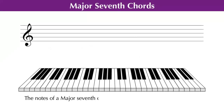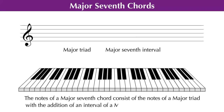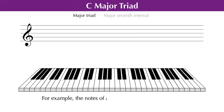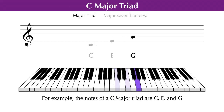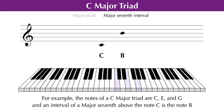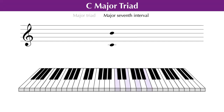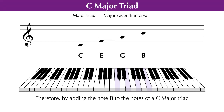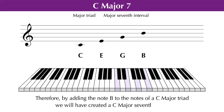The notes of a major seventh chord consist of the notes of a major triad, with the addition of an interval of a major seventh above the root note. For example, the notes of a C major triad are C, E, and G, and an interval of a major seventh above the note C is the note B. Therefore, by adding the note B to the notes of a C major triad, we will have created a C major seventh chord.